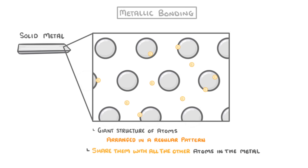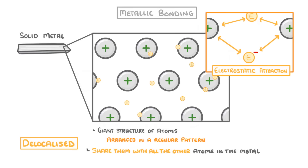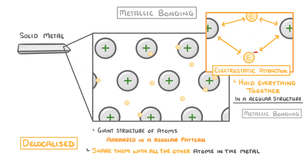This means that the atoms will all become positive ions, because they've lost negative electrons. And because those electrons are now free to move about, we call them delocalised electrons. So there will now be loads of strong electrostatic attraction between the positive ions and the negative electrons, and it's these forces of attraction which hold everything together in a regular structure — so we call this metallic bonding.